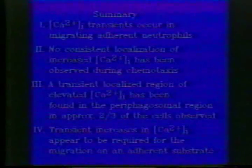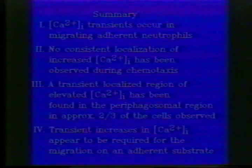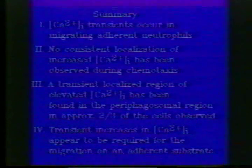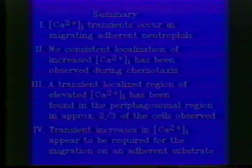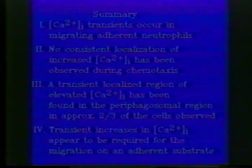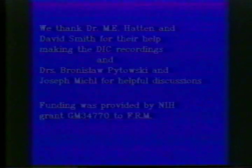In summary, we find that calcium transients occur in migrating neutrophils. No localization of increased cytosolic free calcium is detected at the leading edge of neutrophils during chemotaxis, although a transient periphagosomal localization is apparent in about two-thirds of the cells during phagocytosis. Calcium transients appear to be required for the migration of human neutrophils on an adherent substrate. We would like to acknowledge funding support by a grant from the National Institutes of General Medical Sciences and by a Medical Scientist Training Program grant to NYU School of Medicine.